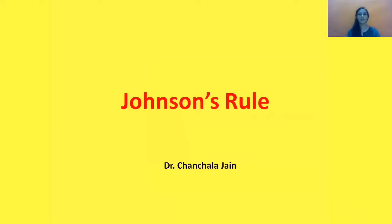In this video, I'll explain how we can sequence jobs in an organization with the help of Johnson's Rule. We can solve this problem for varieties of combinations like n jobs two machines, n jobs one machine, n jobs three machines, etc. Today I'm going to discuss the n jobs two machine case.